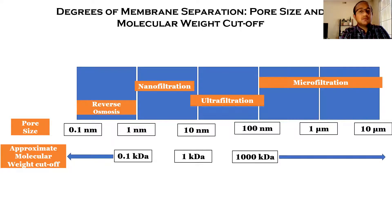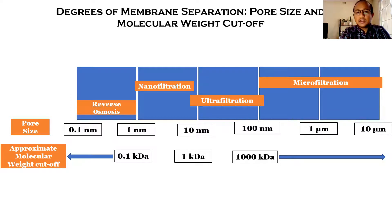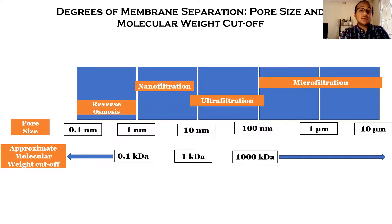The second type of membrane is nanofiltration, with pore sizes ranging from one nanometer to eight to ten nanometers. The molecular weight cutoff of these membranes ranges from 100 Dalton to 800 to 1000 Dalton, or one kilo Dalton. These membranes can provide rejections of 30 to 70% for monovalent ions such as sodium and potassium, and greater than 90% rejection for divalent ions such as calcium and magnesium.